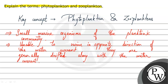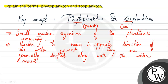In this plankton community, both phytoplankton and zooplankton are present. Phytoplankton, as the name suggests, are the plant part of the planktonic community. And zooplankton, again as the name suggests, are the animal part.